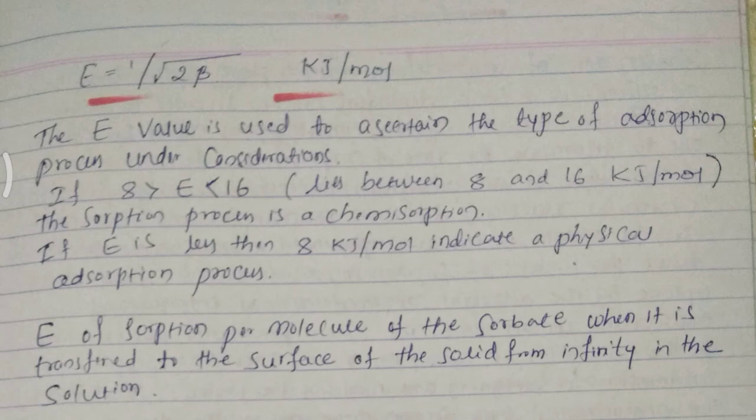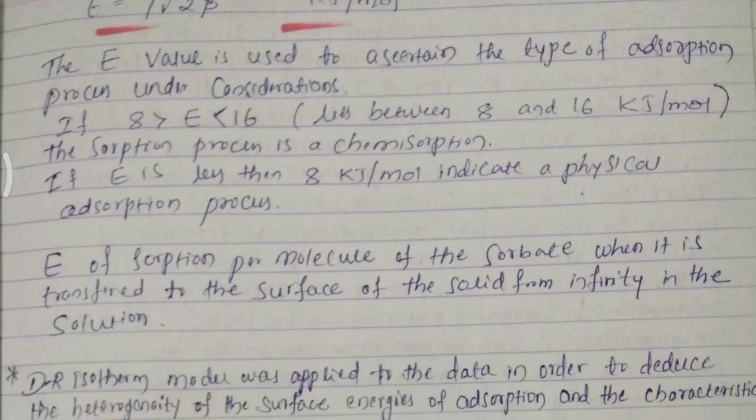If E is less than 8 kilojoule per mole, it indicates a physical adsorption process. E is the energy of absorption per molecule of the sorbate when it is transferred to the surface of the solid from infinity in the solution.